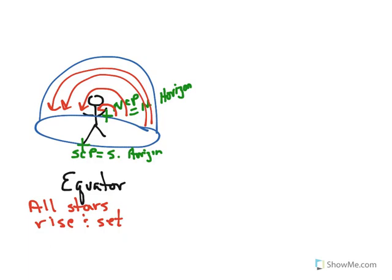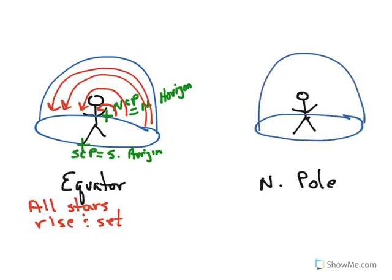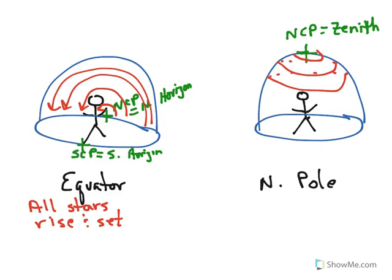The other special case is going to be at the north pole — we could also do this for the south pole, but we're very biased towards the northern hemisphere. So again, here's my little person, here's my horizon, here's my celestial sphere. But now the north celestial pole is going to be on the zenith. And if I watch the stars, they're all going to just be circling around in the sky, following paths parallel to the horizon. So at the north pole, none of the stars rise or set.